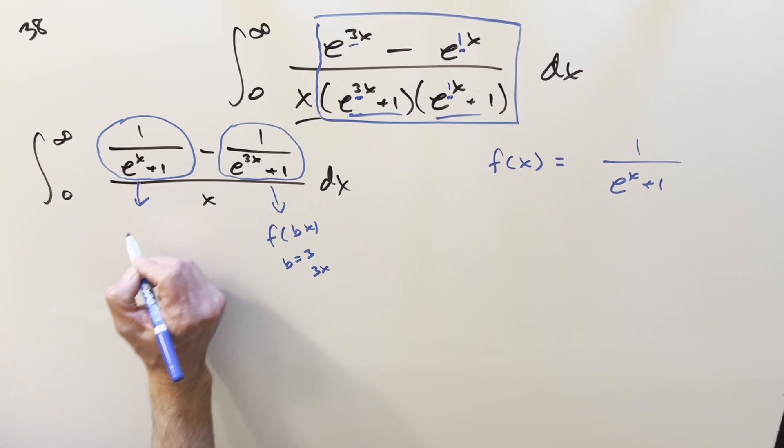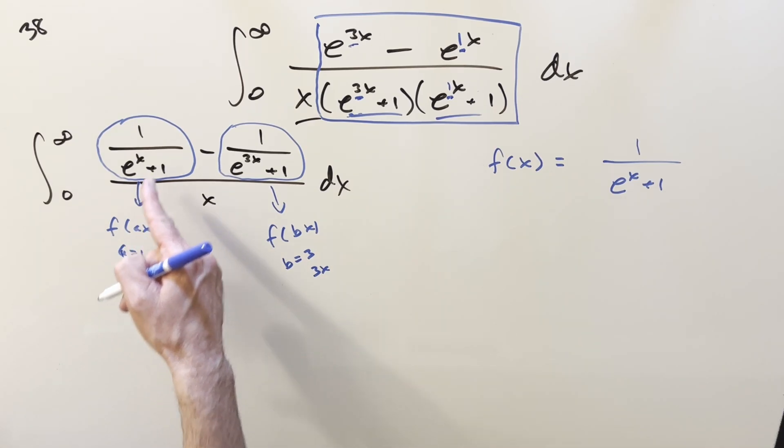For the other one, this is going to be our f of ax, where the a value equals 1. So we're just inputting an x. I know it's identical to this, but technically, we're going to call this our f of ax.